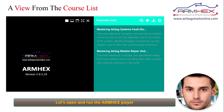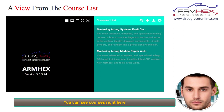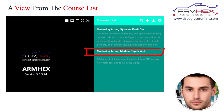Let's open and run the ARM Hex player. You must activate the software to watch the course. For this, just copy and paste the license code that you received immediately after payment. We have already activated the software — it is ready to use. You can see courses right here. As you can see, there are two separate courses here.